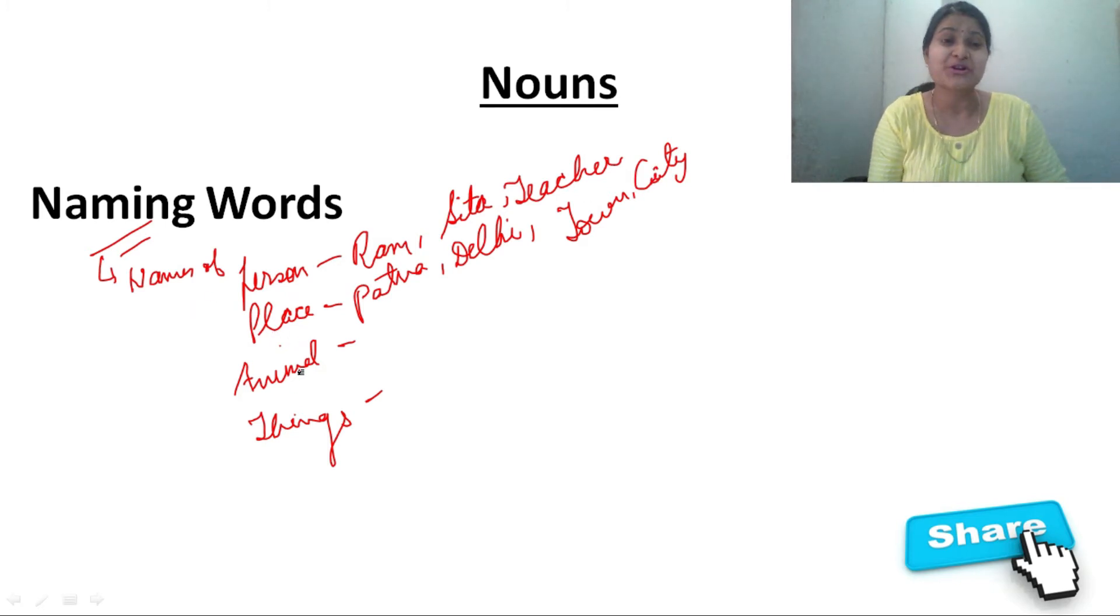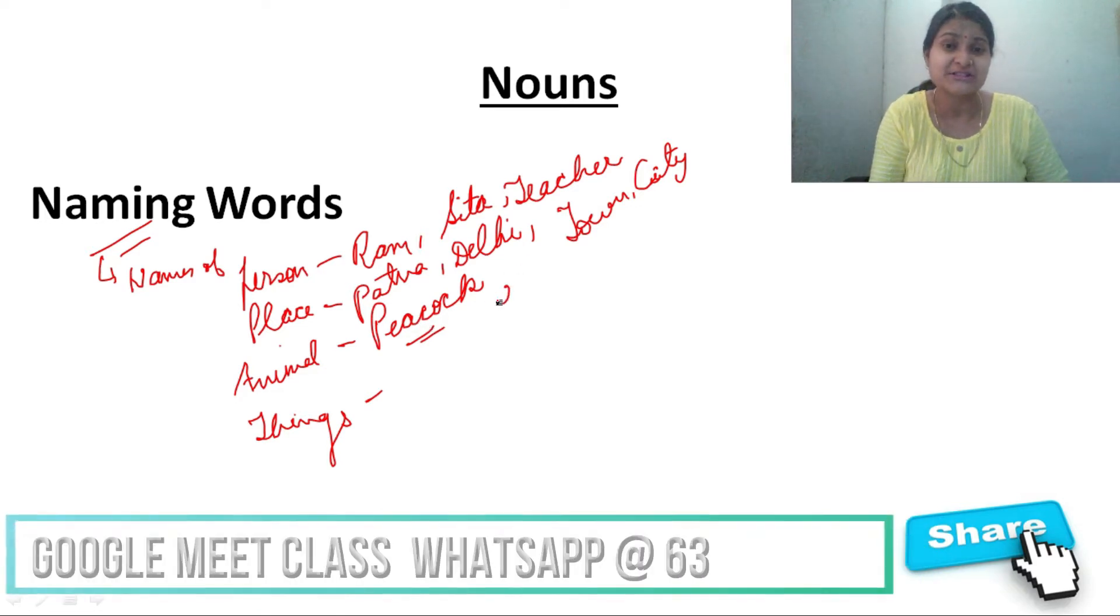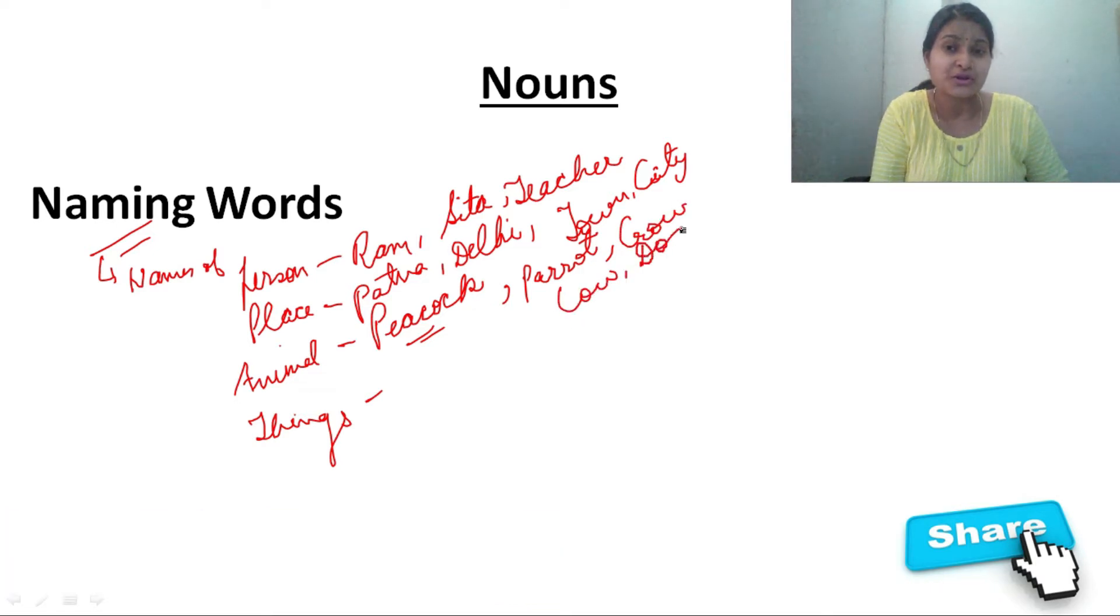Now, come to the section of animals. Which is your favorite animal? So peacock. Do you like peacock? Yes, we like peacock because peacock is also our national bird. Names of animals, names of parrot, peacock, parrot, you can say crow. These are the names of animals. Cow, dog, you must be having dog, pet dog at your house. These are the names of animals.